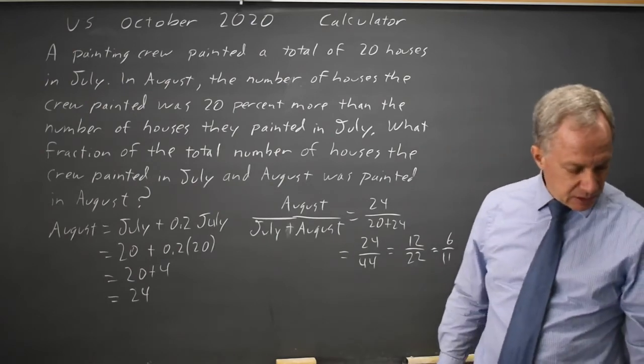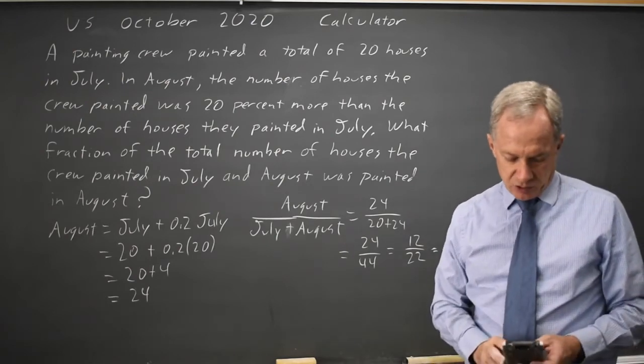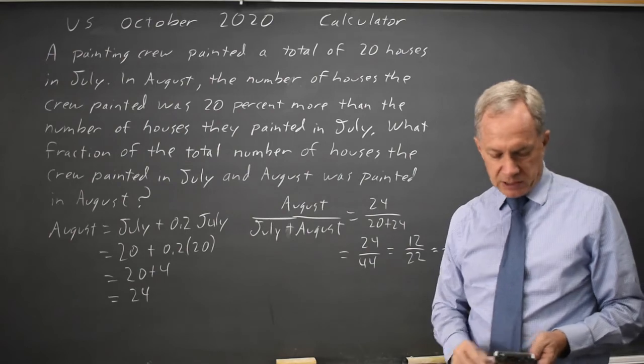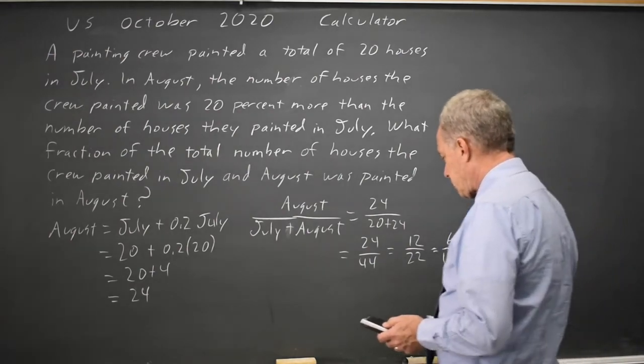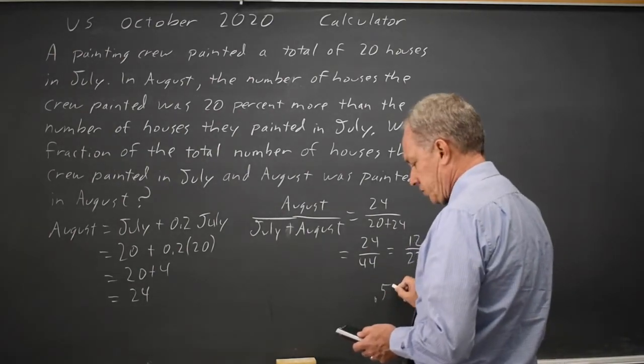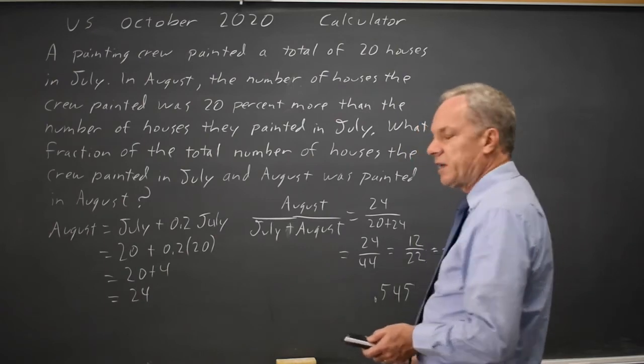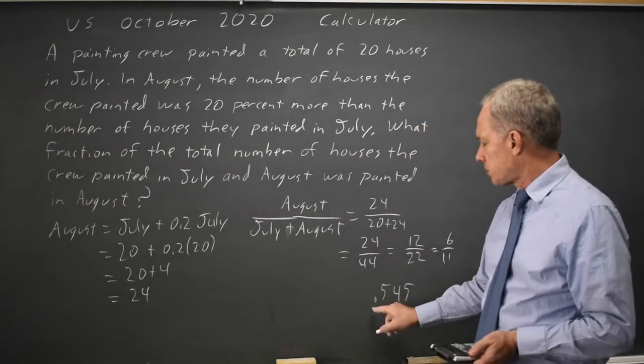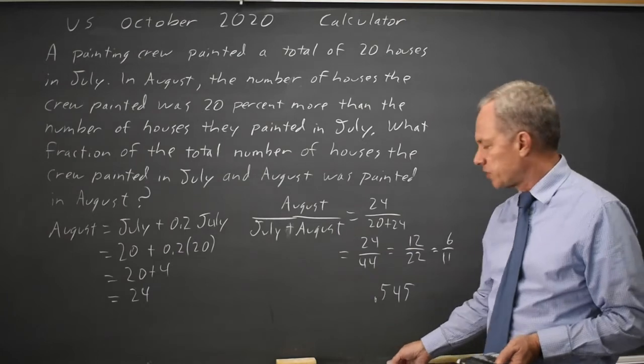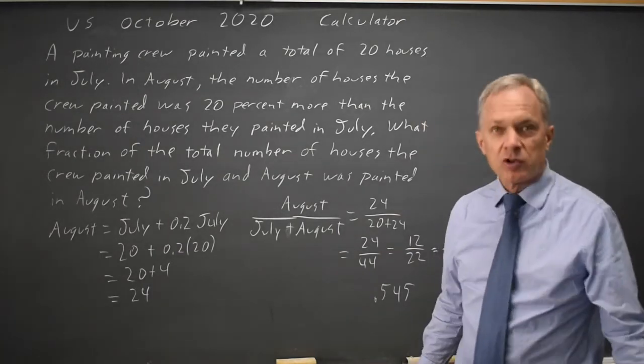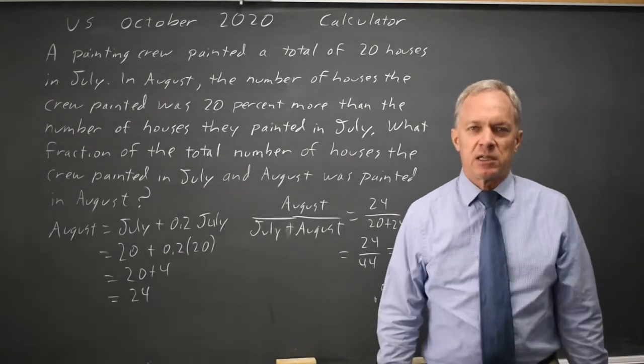Or we can just ask our calculator, 24 over 44, and in decimal I get .545. I can't grid in a leading zero, so I'll just do .545 and fill in all four of the boxes on the grid.